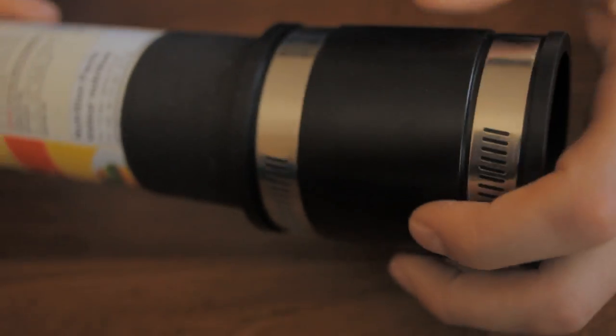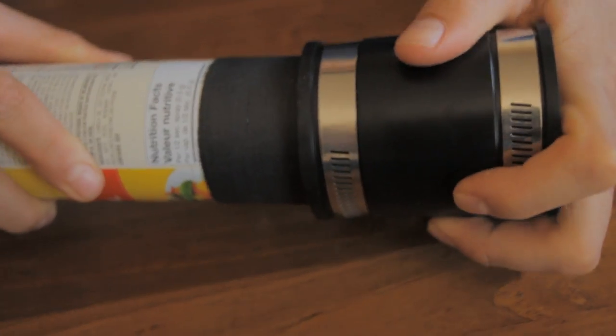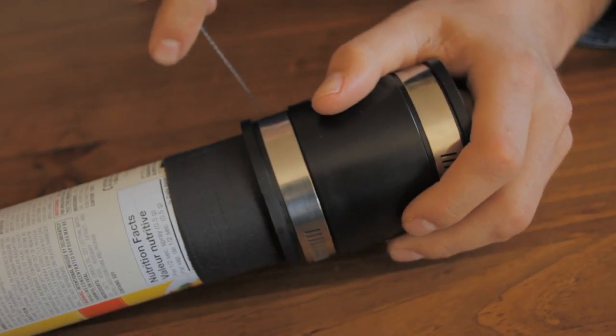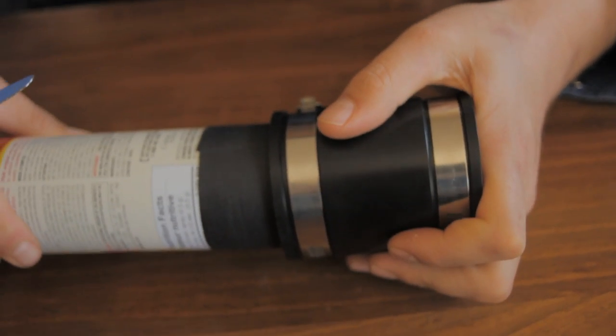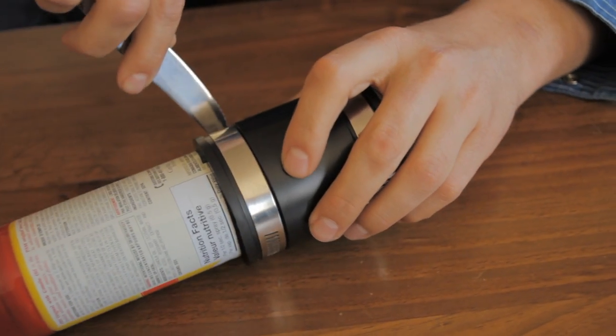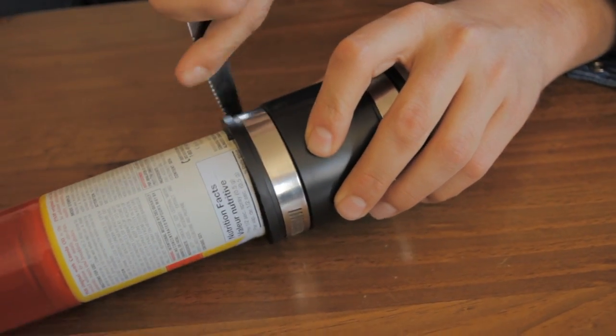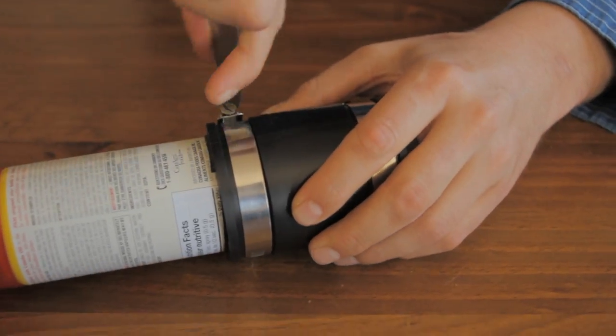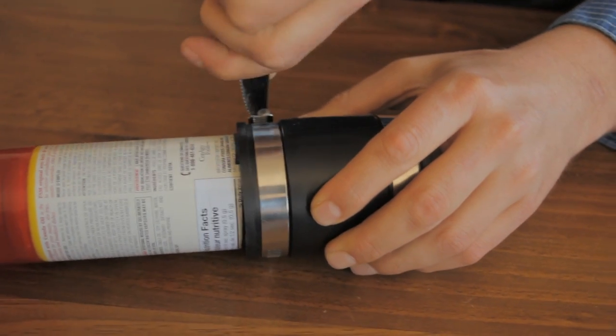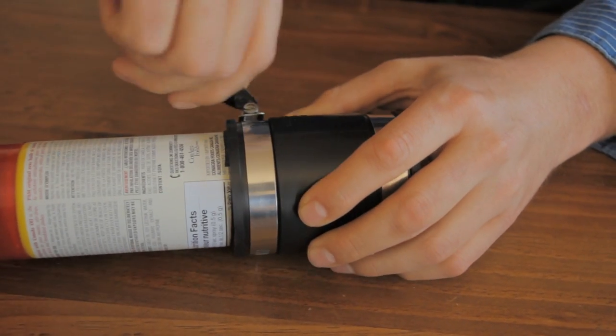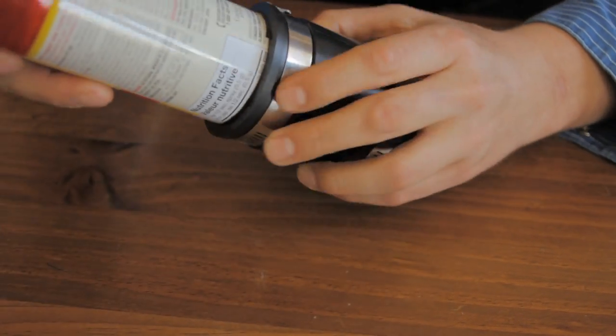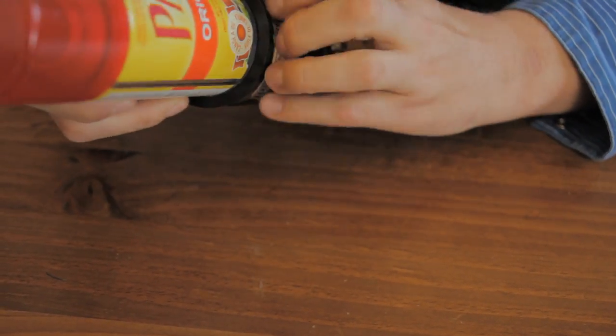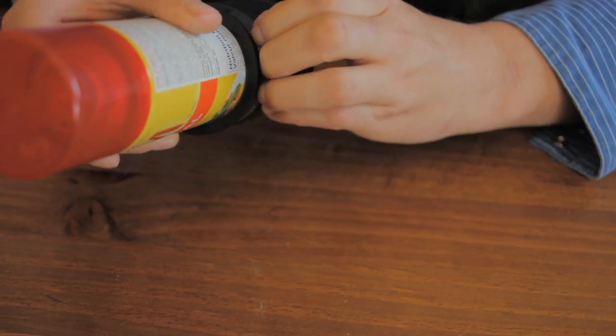Then position that over the PAM can or PVC pipe, whatever you're using and tighten it down. Not too tight, you want to not damage the rubber, but tight enough that it's not going to go anywhere. Double check that you've got your lines straight.